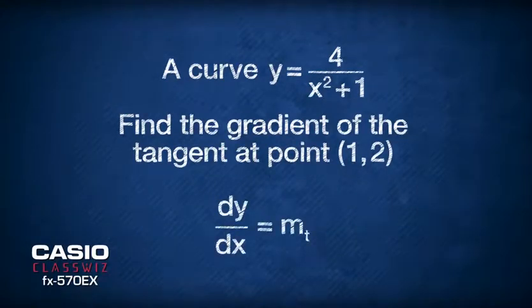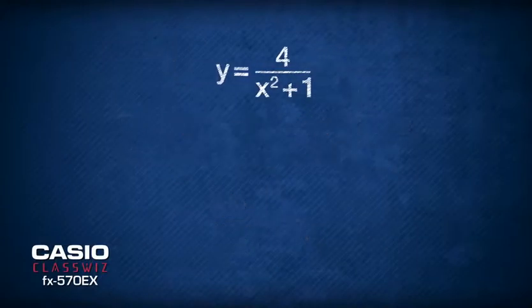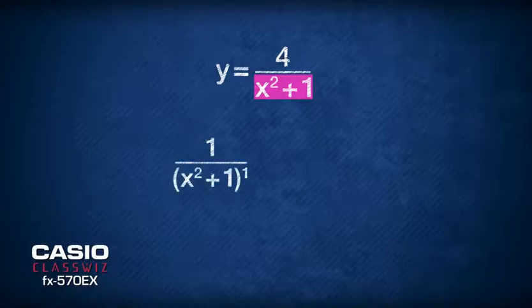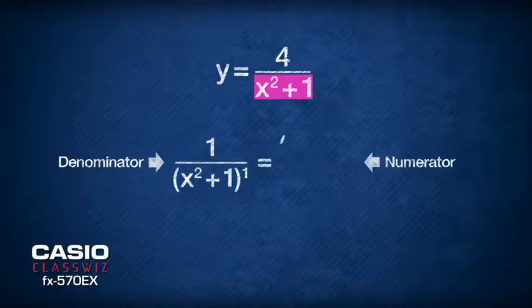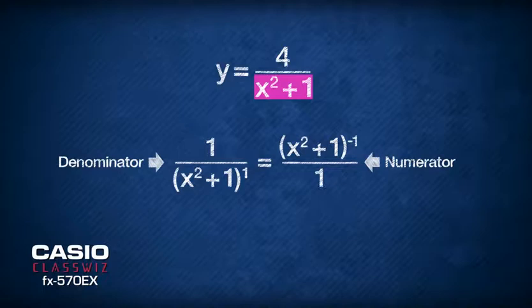Notice that the term of x to be differentiated is in the denominator, so we need to shift it to the numerator. To bring the function x²+1 from the denominator to the numerator, it needs to be written as (x²+1)^(-1), and now it can be placed in the numerator section.